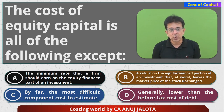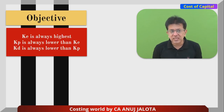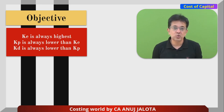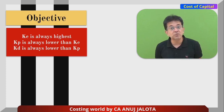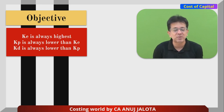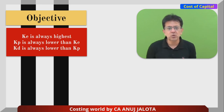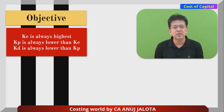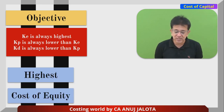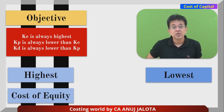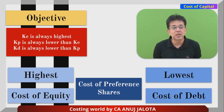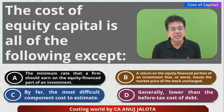Ke is always the highest — because equity shareholders have taken the maximum risk, the company must give them maximum returns, making cost of equity the highest. Then comes Kp: preference shareholders have taken less risk than equity shareholders, so they want lower returns. Kd is always lower than Kp because debenture holders take no risk — even if the company makes a loss, they still receive their interest. So the order is: Ke is highest, Kd is lowest, and Kp is in the middle.